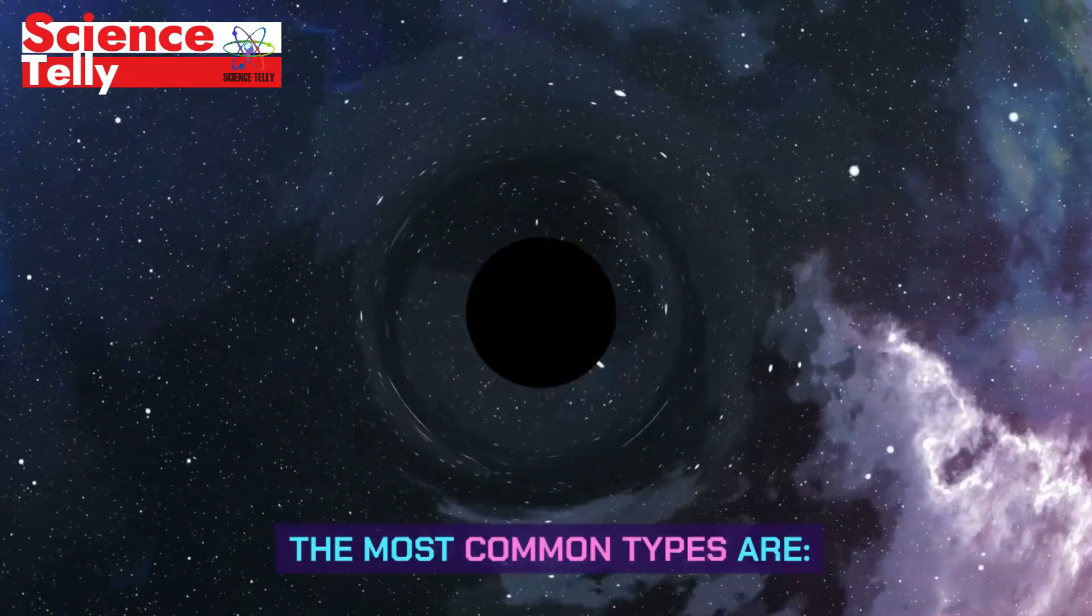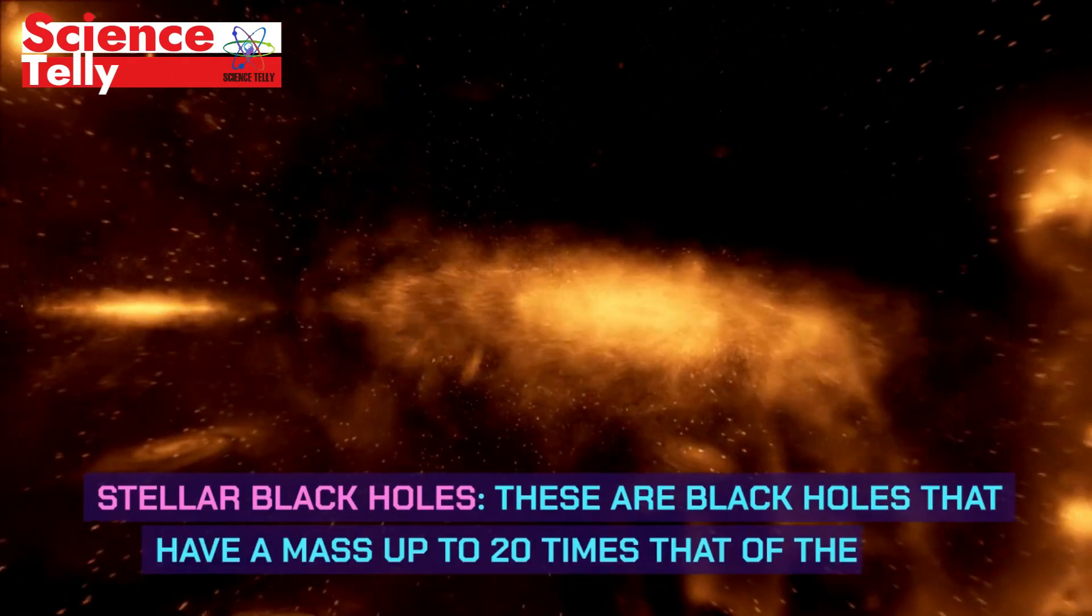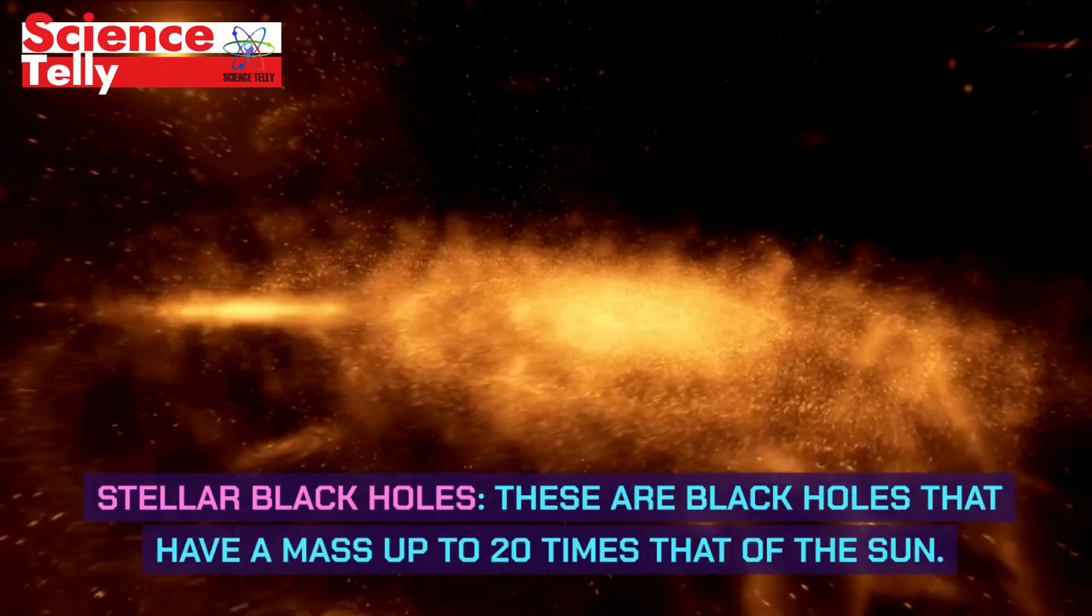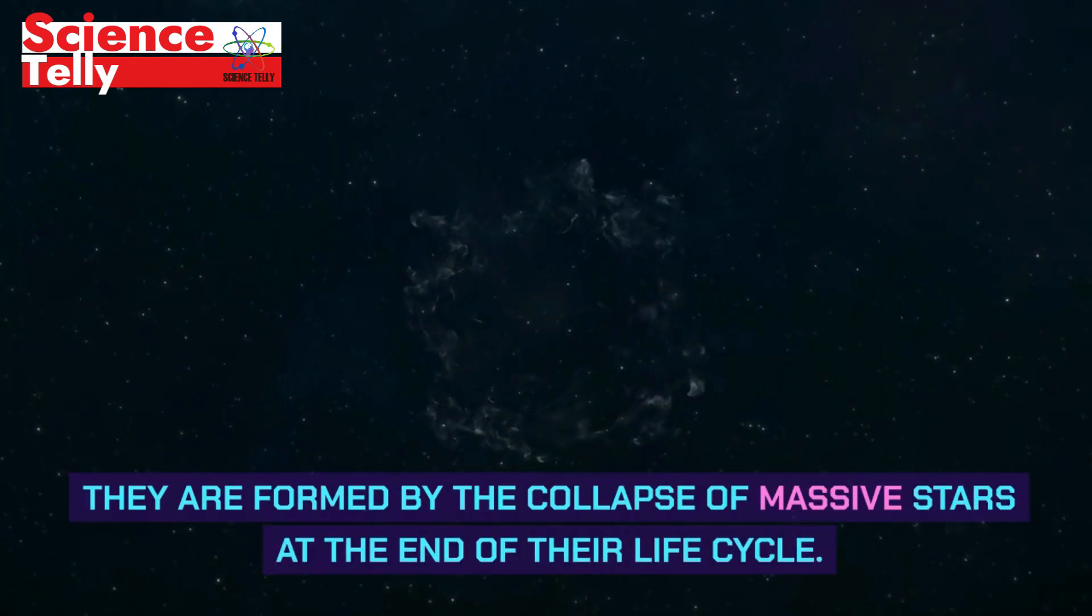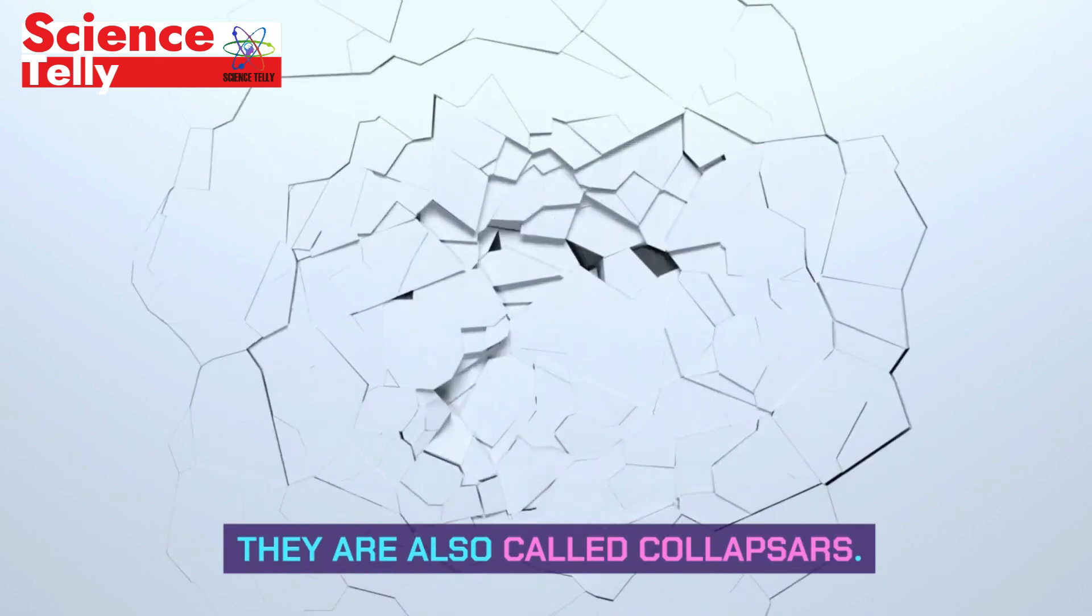The most common types are stellar black holes. These are black holes that have a mass up to 20 times that of the sun. They are formed by the collapse of massive stars at the end of their life cycle. They are also called collapsars.